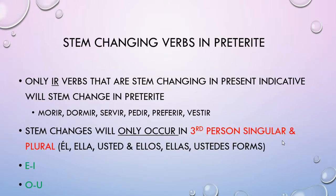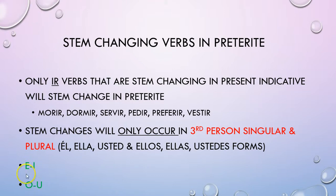Now let's go on to stem changing. A couple of rules: only IR verbs that are stem changing in present tense will stem change in the preterite. Examples are MORIR, DORMIR, and SERVIR — every one is an IR verb that stem changes in present tense. Stem changing in preterite only occurs in third person singular and plural, which is very different from present tense. The changes are E to I — like SERVIR and PEDIR — or O to U, which applies to MORIR and DORMIR.